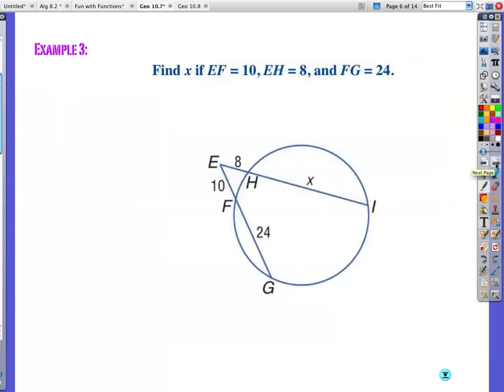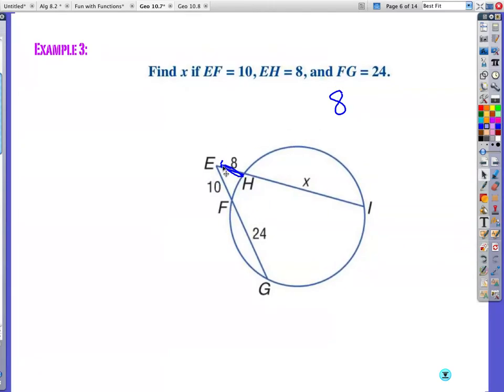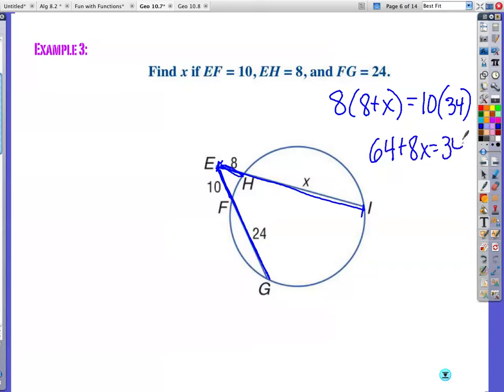Here's what we've got. Your outside times the full length is equal to the outside times the full length. The outside, sorry, that's a bad drawing, 8 times the full length. The full length, it's not x, it's not 8, it's 8 plus x, is equal to the outside times the full length. The full length on that is 24 plus 10, which is 34. So if I keep going here, distributive property, 64 plus 8x is equal to 340.